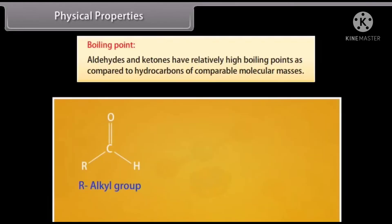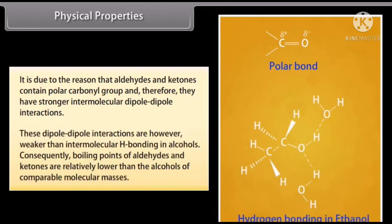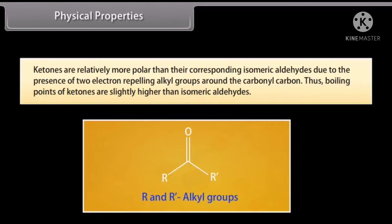Boiling point: aldehydes and ketones have relatively high boiling points compared to hydrocarbons of comparable molecular masses. This is because aldehydes and ketones contain a polar carbonyl group, giving them stronger intermolecular dipole-dipole interactions. These dipole-dipole interactions are, however, weaker than intermolecular hydrogen bonding in alcohols, so boiling points of aldehydes and ketones are lower than those of comparable alcohols. Ketones are relatively more polar than their isomeric aldehydes due to two electron-repelling alkyl groups around the carbonyl carbon, so boiling points of ketones are slightly higher than isomeric aldehydes.